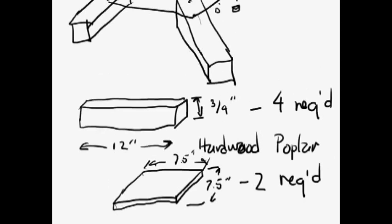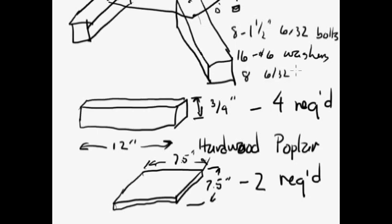You'll also need the bolts: inch and a half, 6-32 bolts, and you need eight of those. You'll need 16 number six washers, and you're going to need eight 6-32 nuts. All right, let's get on with the video and see what this actually looks like when you assemble it.